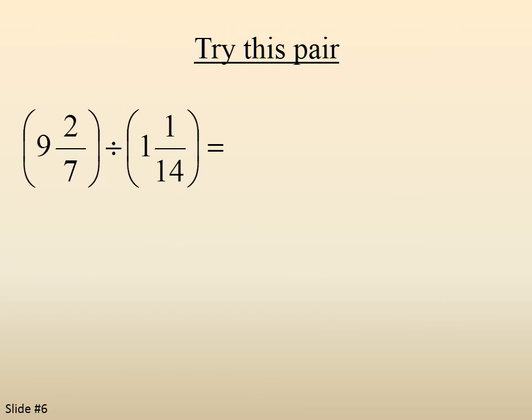9 and 2 sevenths divided by 1 and 1 fourteenth. Again, we convert to improper fractions. 9 and 2 sevenths becomes 65 sevenths. 1 and 1 fourteenth becomes 15 fourteenths.